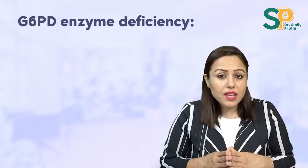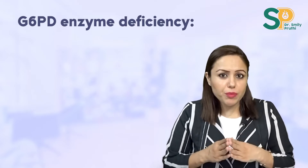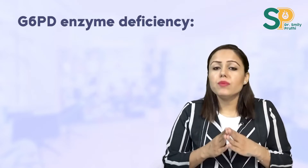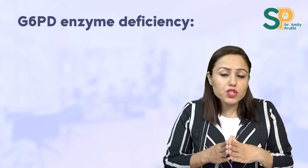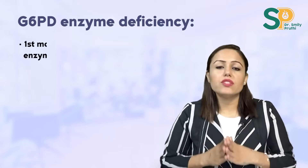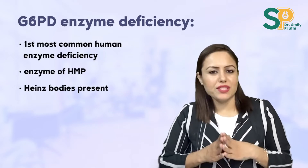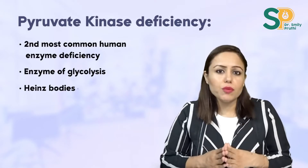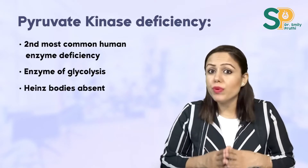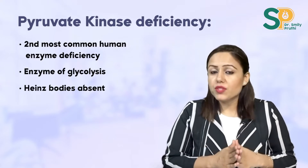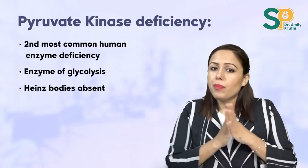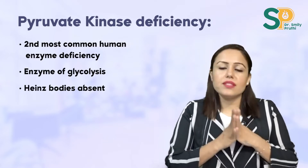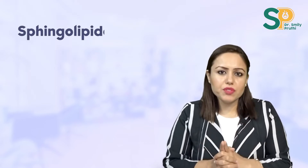Do pyruvate kinase and G6PD deficiency — both cause hemolytic anemia. In G6PD deficiency there are Heinz bodies. G6PD deficiency is the most common human enzyme deficiency, while pyruvate kinase deficiency is the second most common. G6PD is an enzyme of the HMP pathway; pyruvate kinase is an enzyme of glycolysis.